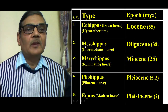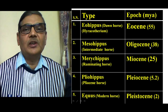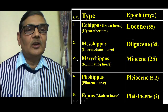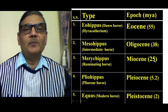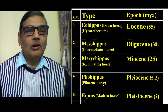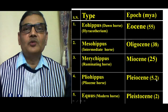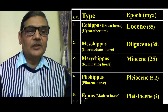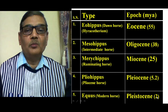The second form was Mesohippus, referred to as the Intermediate horse, which evolved during the Oligocene, about 38 million years ago. The third form was Merychippus, the Ruminating horse, originating during the Miocene, nearly 25 million years ago. The fourth type was Pliohippus, the Pliocene horse, present during the Pliocene, about 5.2 million years ago. The present form, Equus, the modern horse, originated in the Pleistocene epoch nearly 2 million years ago and has undergone further changes up to now.